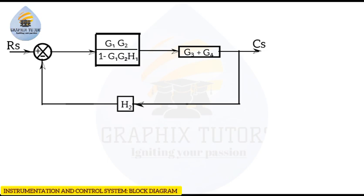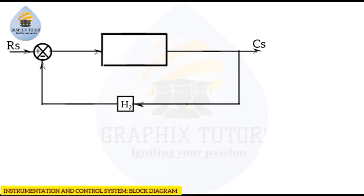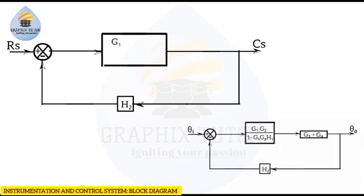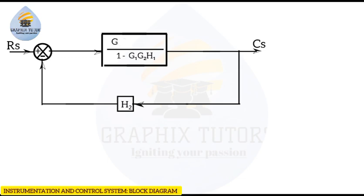Since the same signal is going into both blocks, they are in series, so we multiply them. If I do that, I'll be having g1g2 into brackets (g3 + g4), applying your distributive rule all over one minus g1g2·h1. I still have h2 and the negative feedback remaining. Expanding this: g1g2 times g3 gives g1g2g3, plus g1g2 times g4 gives g1g2g4, all over one minus g1g2·h1.